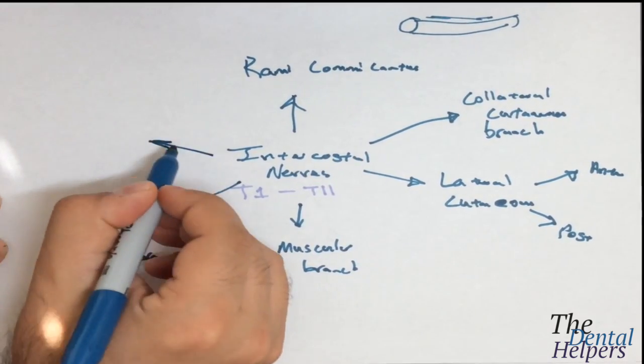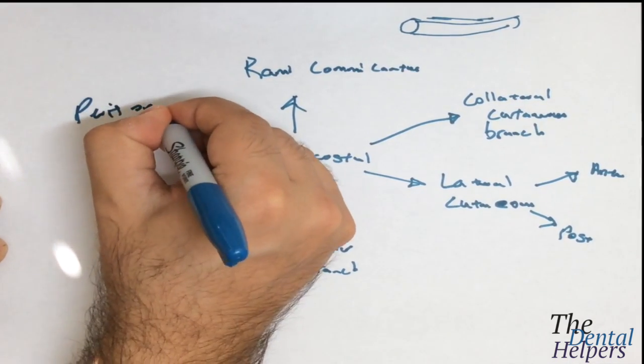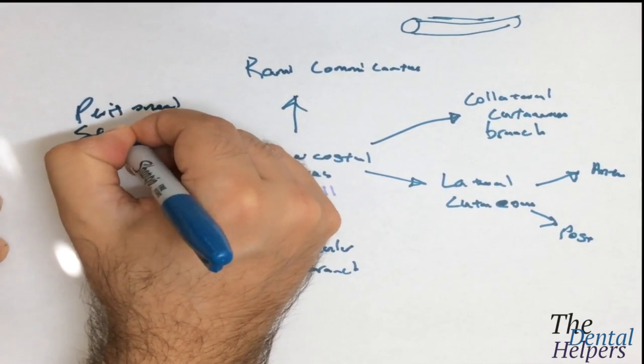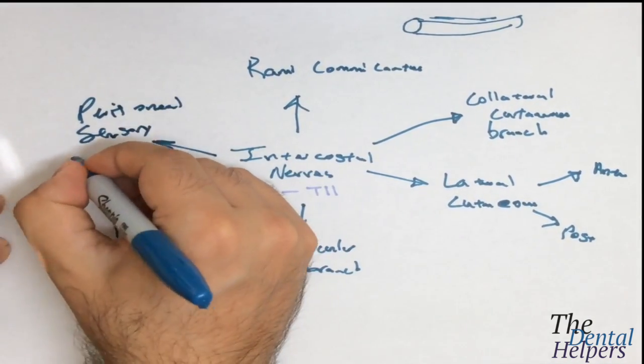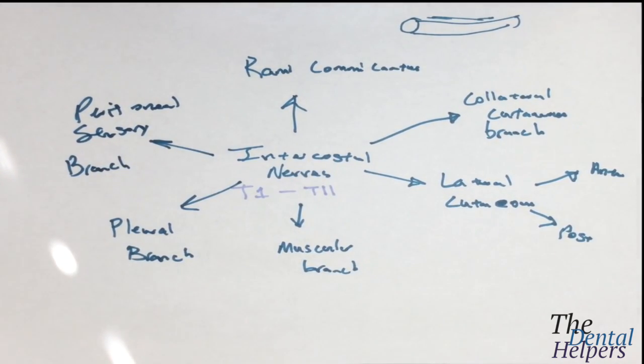Lastly, we have the peritoneal sensory branches, which are similar to the pleural sensory branches but arise from the lower intercostal nerves because the lower intercostal spaces are more related to the peritoneum than the parietal pleura.